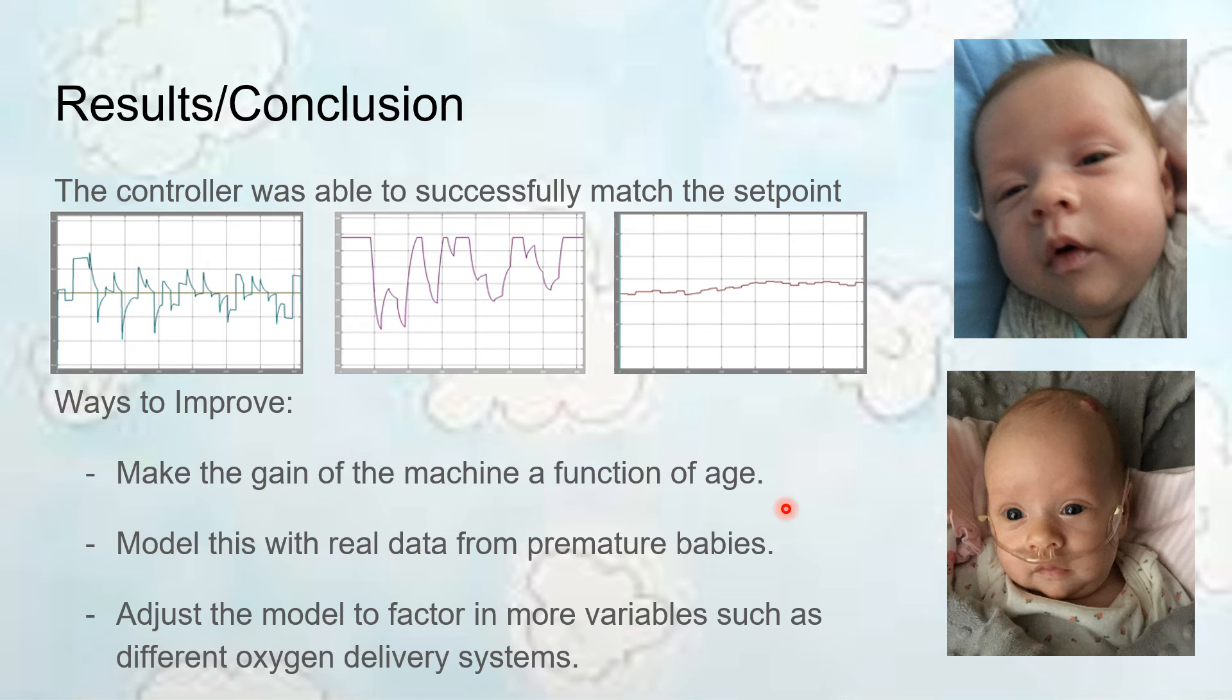In addition, trying to get some more data, I mean, we had some qualitative kind of observations from Hans, but getting some real data would be helpful. Then also being able to model different systems. We model this as a CPAP machine, so all the air is coming from that machine. Being able to model this as machines such as just these nasal tubes and stuff where only part of it is coming in from this oxygen delivery and part of it is from regular air. So, thank you very much.